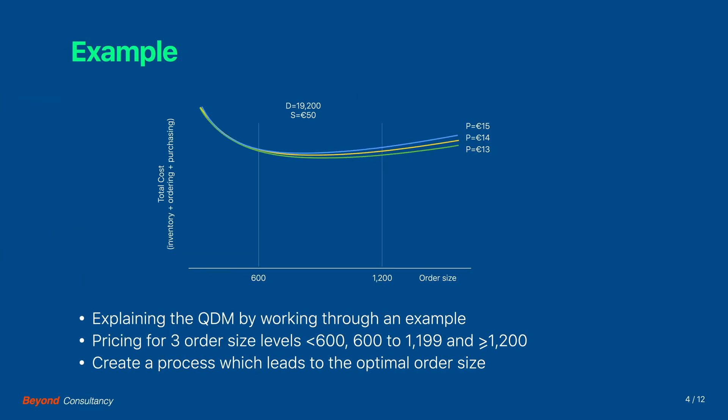We will explain the Quantity Discount model by working through an example. The example assumes three different price settings corresponding with three different order size brackets, and we will detail one thing and another and also create a process that leads to the optimal order size.